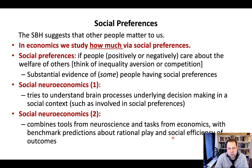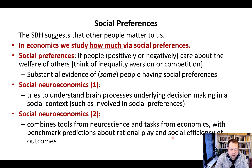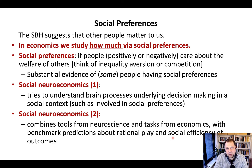What does social neuroeconomics do? The goal is to understand the brain processes — not just the neural correlates, but also the specific mechanisms involved in decision making in social contexts. We're looking for neural correlates of social preferences. This is done by combining tools from neuroscience, such as fMRI, with tasks from economics like the trust game, the ultimatum game, and many others.